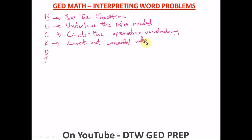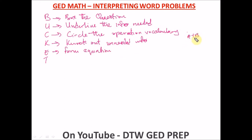So just have this BUCKET in mind when trying to solve any word problem. E means form the equation that would help you solve it. Every word problem has an equation, even if it's as simple as A plus B. Form the equation to help you get the solution.